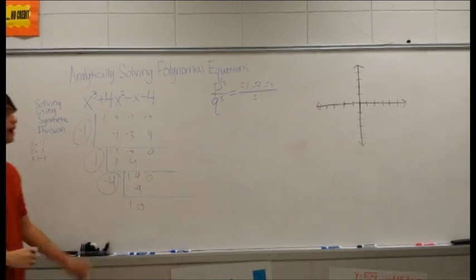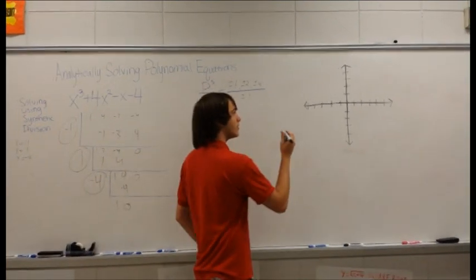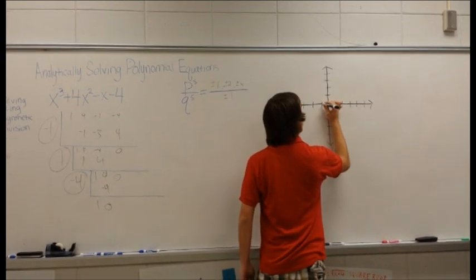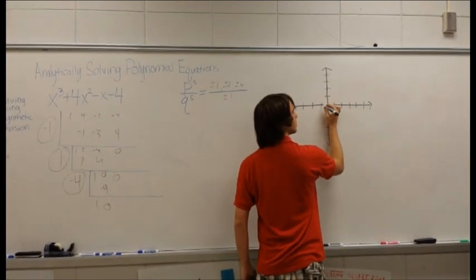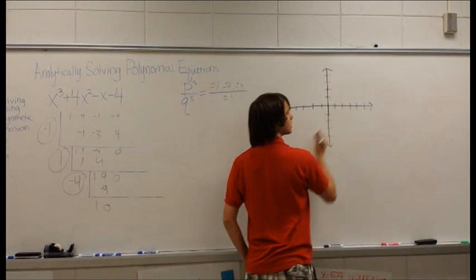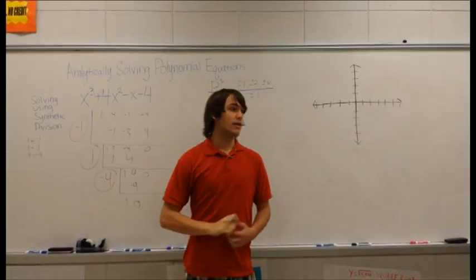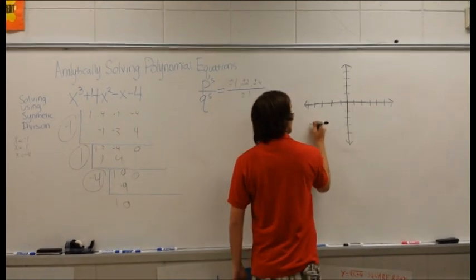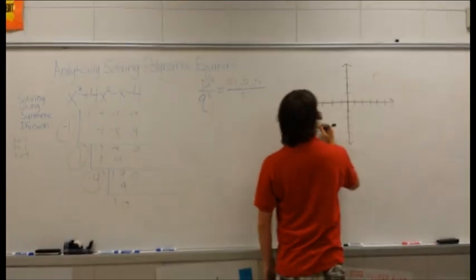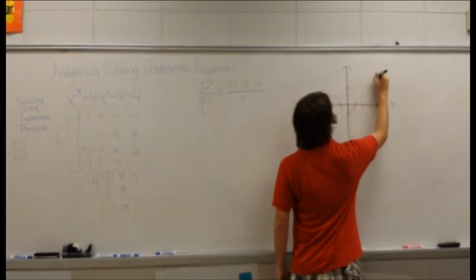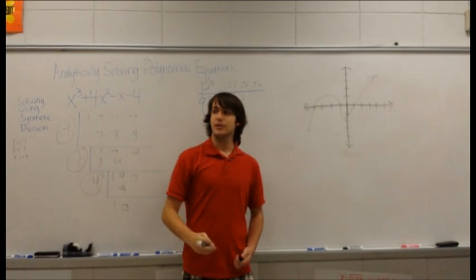Now to graph that, all you have to do is put points at (-4, 0), (-1, 0), and (1, 0). And then you look at the leading coefficient, and it's positive. So it would be down to the left and up to the right. And then you just sketch your graph. And that's how you do it.